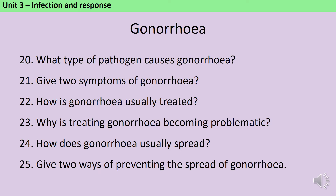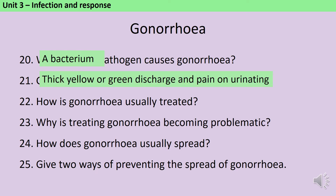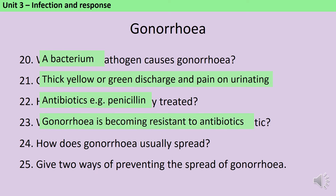Gonorrhea is another bacterial disease and the symptoms include a thick yellow or green discharge and also pain while urinating. It's usually treated using antibiotics, but we have a slight issue in that the bacteria are becoming resistant to those antibiotics. Gonorrhea is a sexually transmitted infection so it tends to spread through sexual contact. The spread can be reduced by treating existing infections with antibiotics and also by using barrier methods of contraception such as condoms.